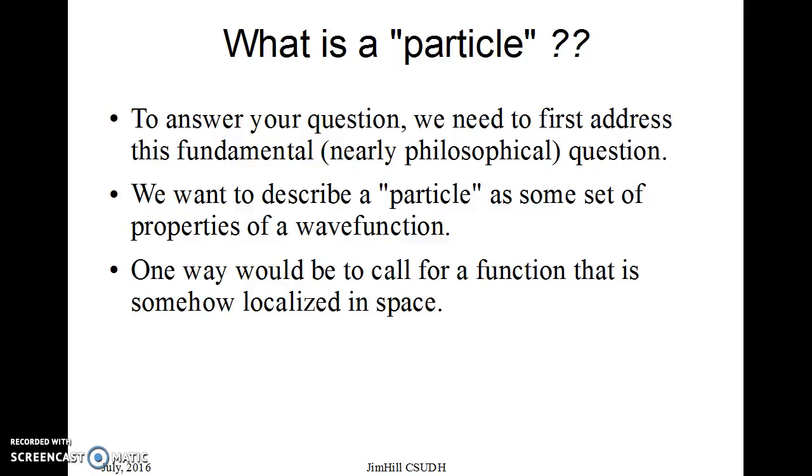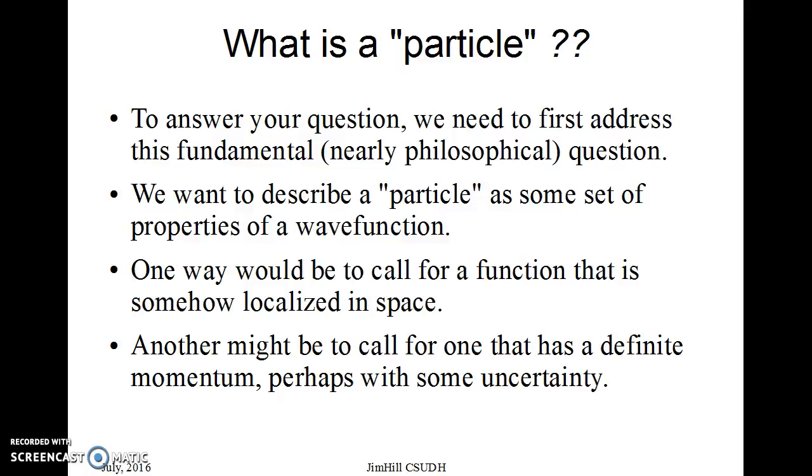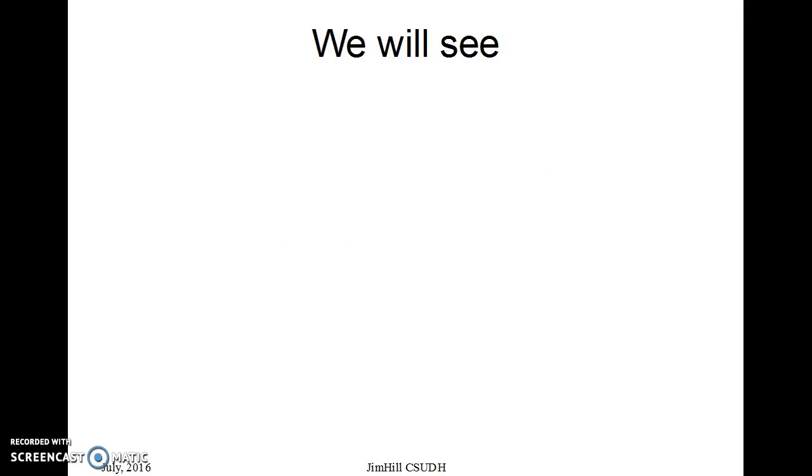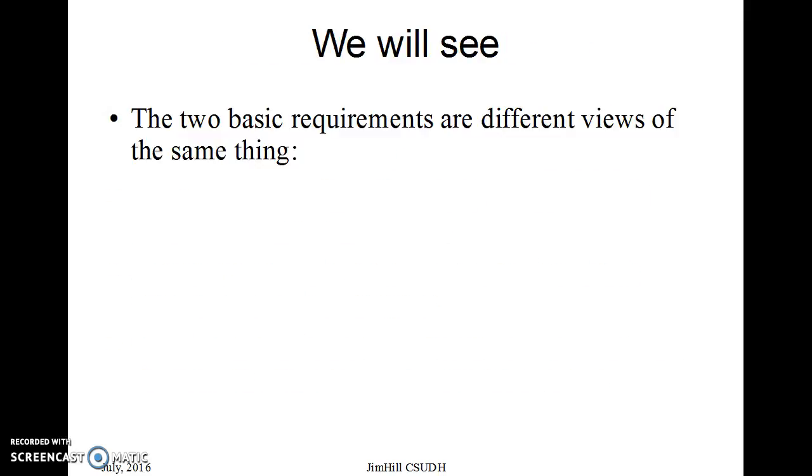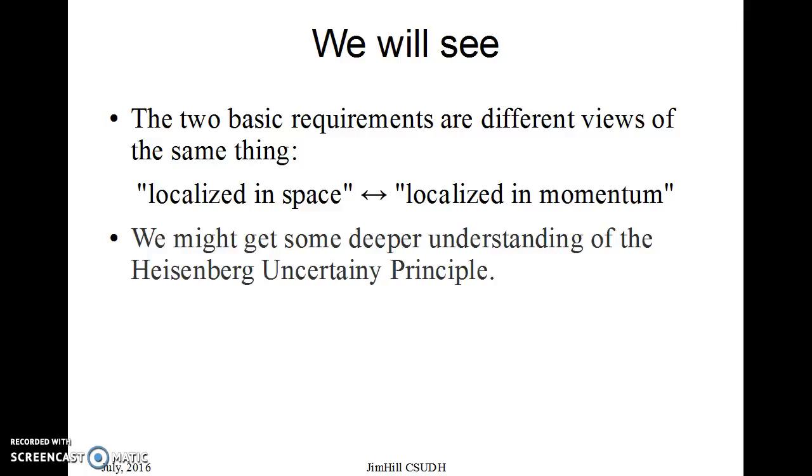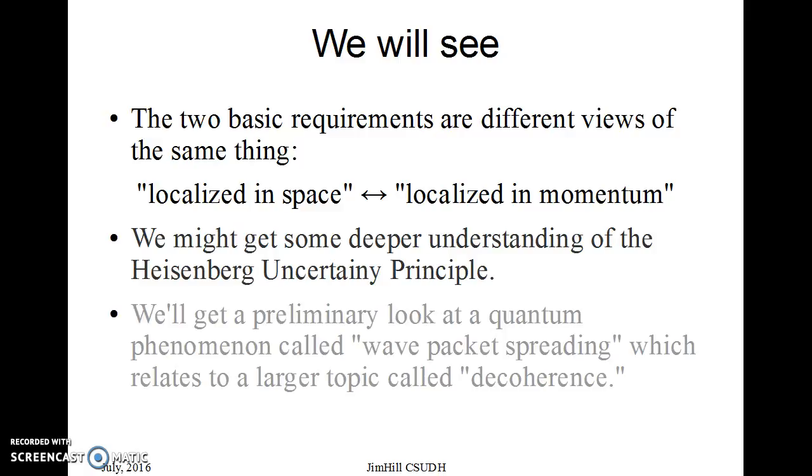An alternate description might be to say that it has a definite momentum, so it can follow a trajectory, and again, not necessarily exactly one value but some uncertainty. We're going to see this is one of the points here: those two basic pictures are the same thing. That if I talk about something localized in space, that's equivalent to being localized in momentum. As we do that, we will hopefully get some deeper understanding of what's going on with Heisenberg uncertainty principle. And then what follows up, the more rigorous part at the end that's more difficult, is a preliminary look at this quantum phenomenon called wave packet spreading, which relates to a larger topic we won't get to here called decoherence.